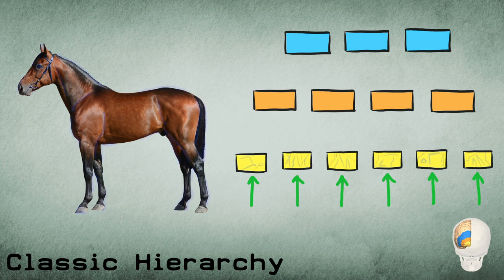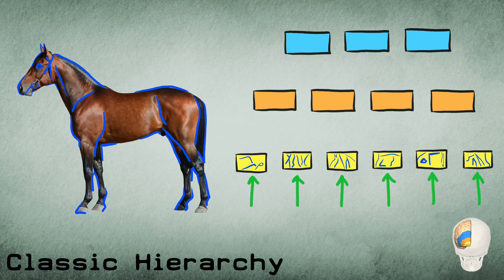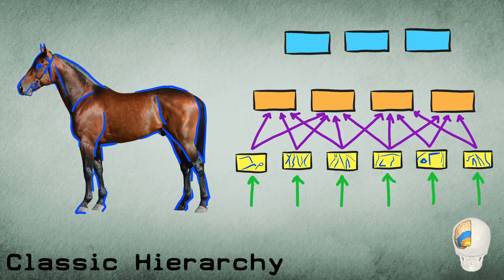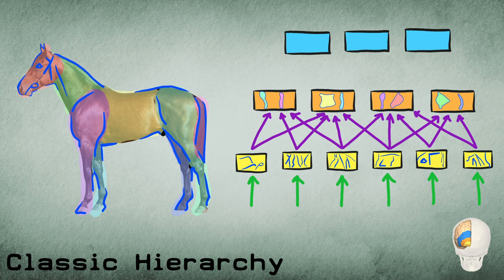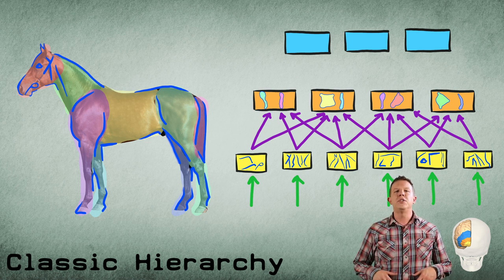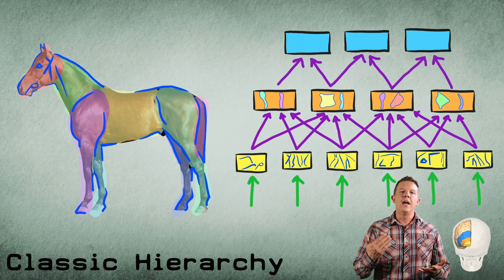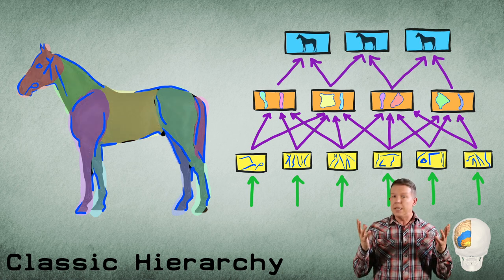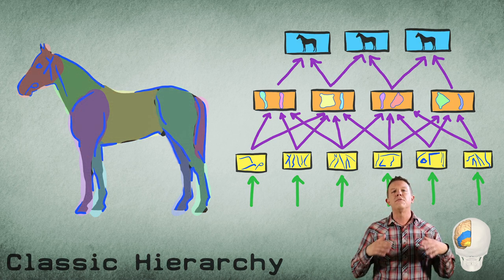These regions identify low-level features like edges. These representations are input to the next level of the hierarchy. As we ascend the hierarchy, input from the lower levels is used to compose larger shapes or object parts. Again, these representations converge in a higher level, and at the top of the hierarchy, complete objects are constructed from these converging features.